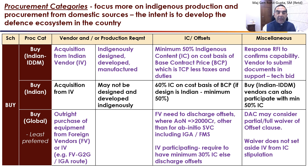The next category is BUY Indian. Acquisition can only be from an Indian vendor, but in this category the product may not be indigenously designed and developed. However, 60 percent indigenous content on cost basis of the BCP has to be attained. If an Indian vendor has indigenously designed the product, a minimum of only 50 percent indigenous content is required. Therefore, a BUY Indian IDDM category vendor can also participate in the BUY Indian category with a minimum 50 percent indigenous content.